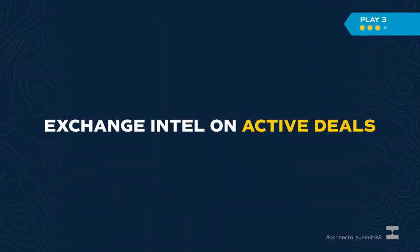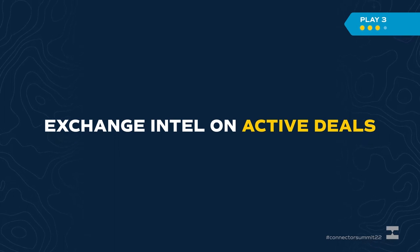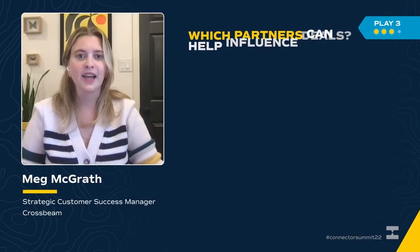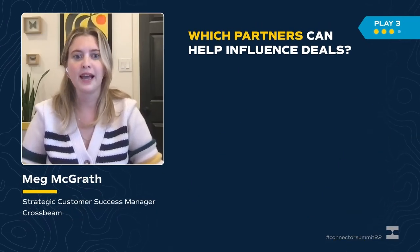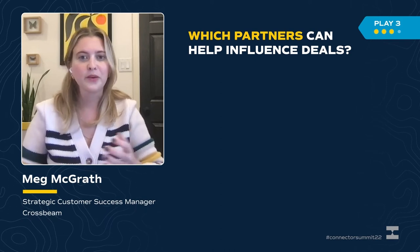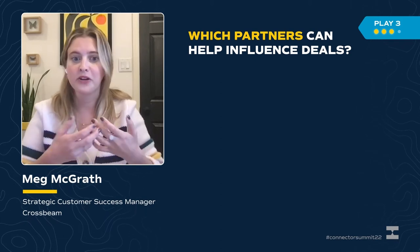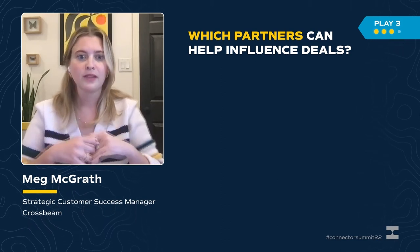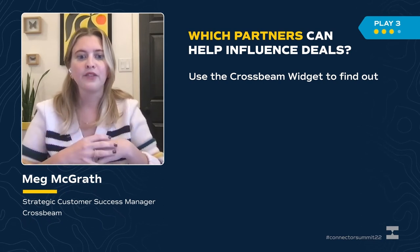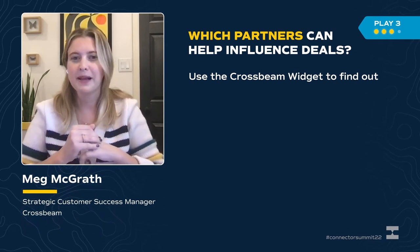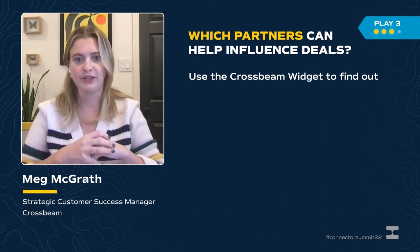Let's get started with play number three: exchanging partner intel on active deals to help move them forward. Your AEs can help move deals forward by seeing which of your partners have relationships at their open opportunities — in other words, which partners can help influence your deals. If a deal has gone dark or become a little competitive and your reps want to get intel and extra backup, you can use the widget to do this.